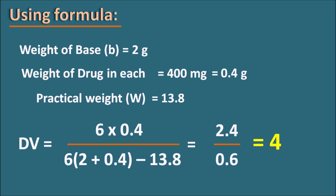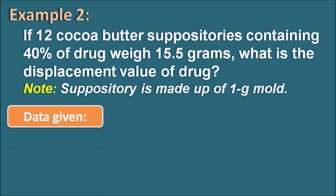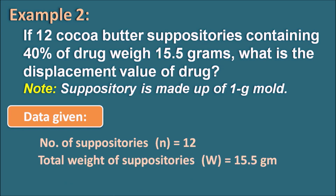Example 2: If 12 cocoa butter suppositories containing 40% of the drug weigh 15.5g, what is the displacement value? The suppository is made in a 1g mold. Data: n = 12, total practical weight = 15.5g, and the drug concentration = 40%.